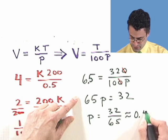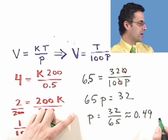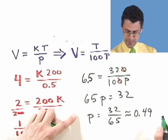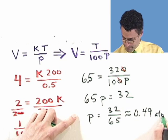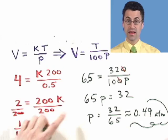And so P equals 32 divided by 65, which we can put on a calculator and see it's about 0.49. And my units here are atmospheres. And that's the answer.